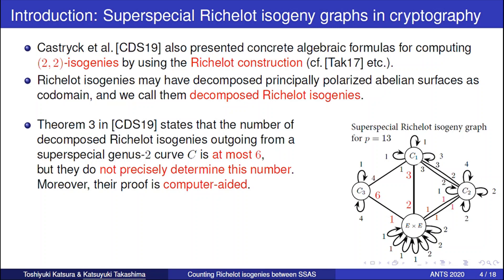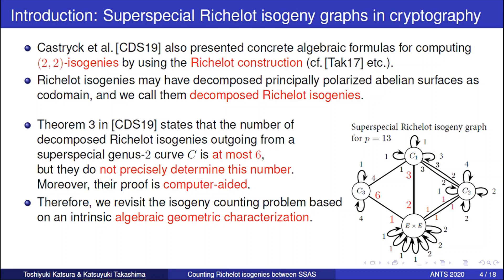A theorem in Katsura et al.'s paper states that the number of decomposed Richelot isogenies from a genus-2 curve is at most 6, but they do not precisely determine this number. Moreover, their proof is computer-aided, that is, it is based on some Gröbner basis computation. So we revisit the isogeny counting problem based on an intrinsic algebraic geometric characterization.